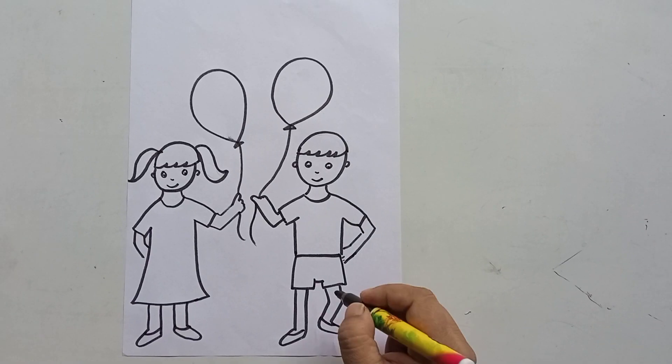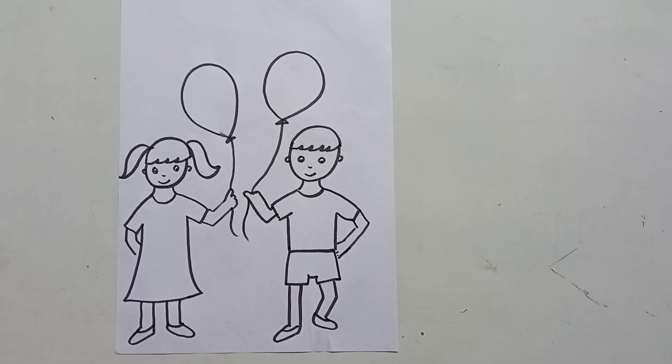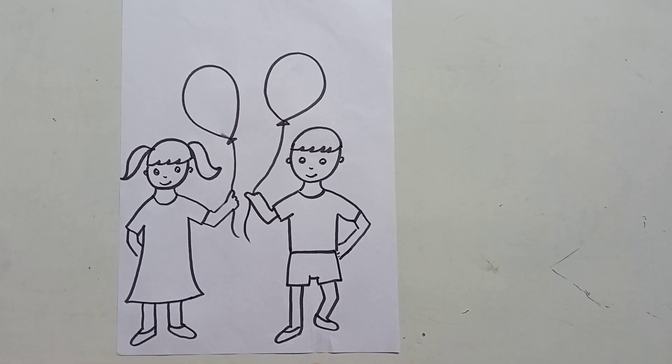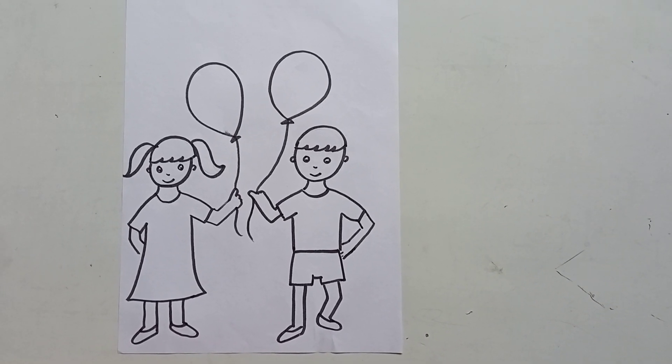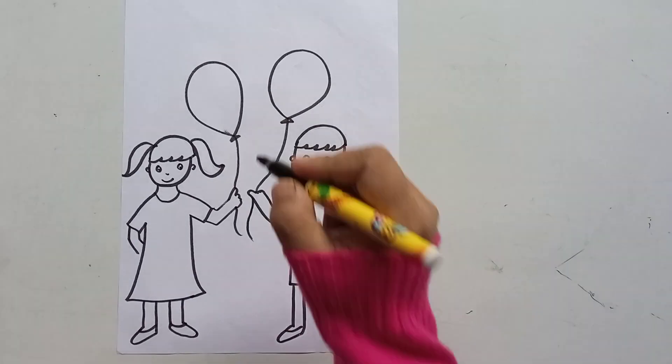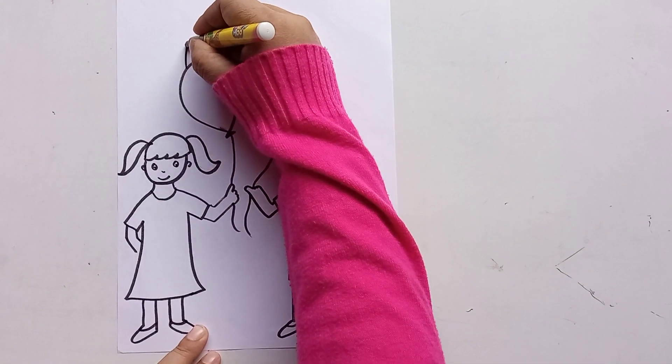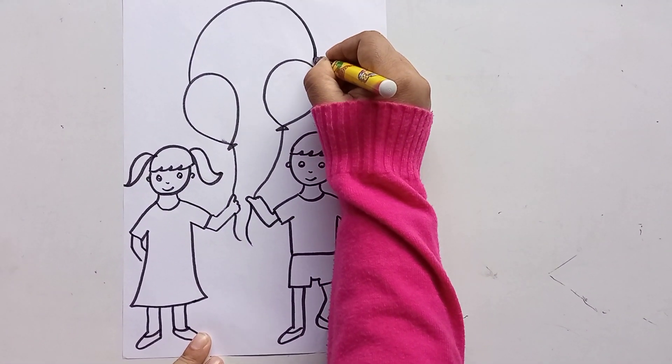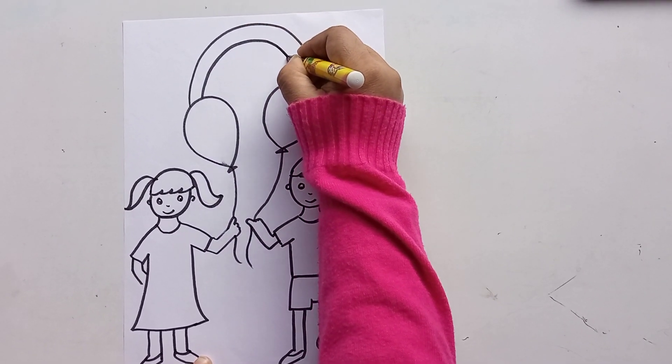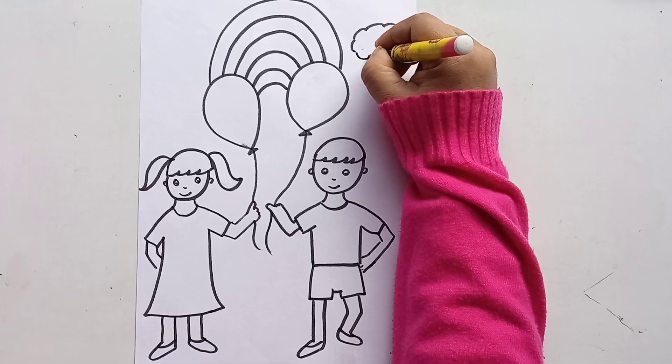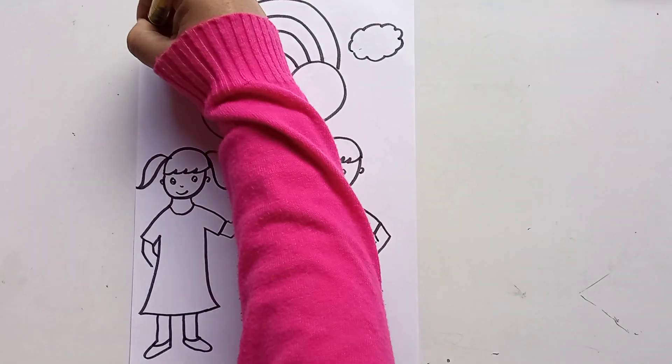So this is a boy and this is a girl, and they are holding a balloon. Now I will add some imagination - they are flying and they have reached the rainbow. So I will draw a rainbow attached to these balloons, and these are the clouds.